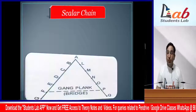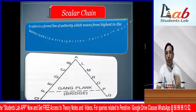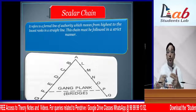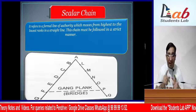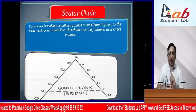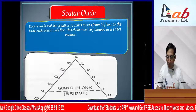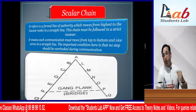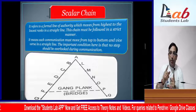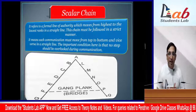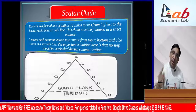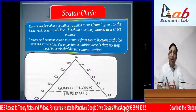The second principle given by Henry Fayol was Scalar Chain. Scalar Chain means following the chain - following the formal line of authority. It refers to the formal line of authority which moves from the highest to the lowest rank in a straight line. If A wants to communicate with F, A will not directly talk to F. A tells B, B tells C, C tells D, D tells E, and E tells F. Similarly in reverse, each communication must move top to bottom and vice versa in a straight line - that is called Scalar Chain.